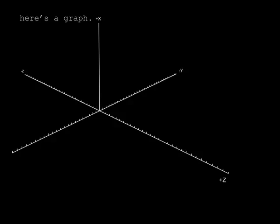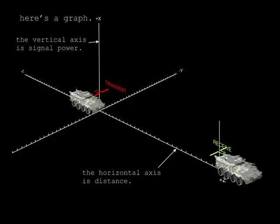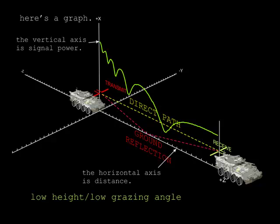The question is why. The answer is it's due to the environment. Here's a graph where the vertical axis is signal power and the horizontal axis is distance. With a transmitter at one point and a receiver at another, there is a direct path and an indirect path — or a ground reflection — between the two. This results in a graph of power versus range characterized by peaks and nulls along the path.